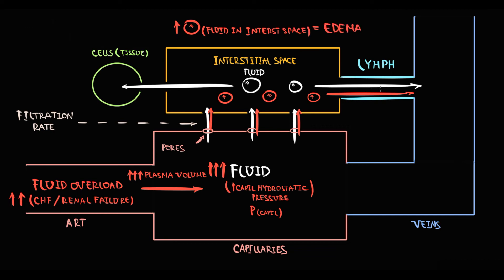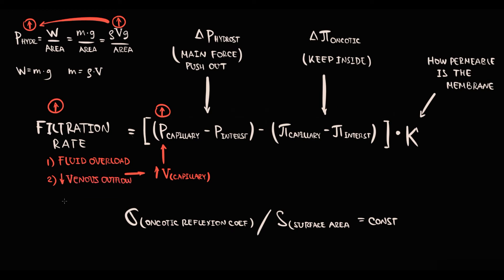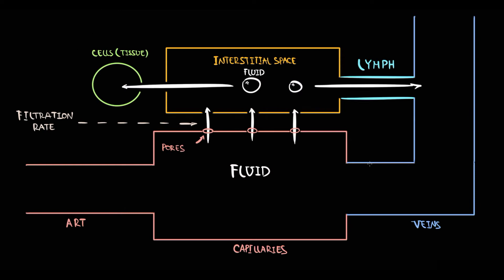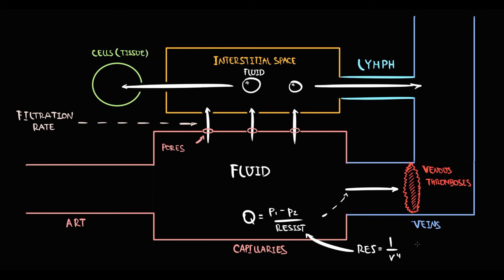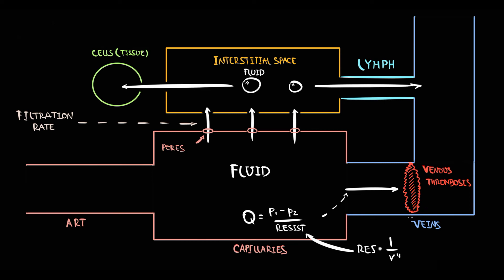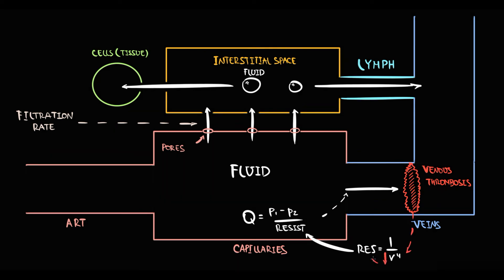The second factor that can increase capillary hydrostatic pressure is decreasing venous outflow, caused by venous thrombosis, compression of the venous vessel by tumor mass, or in congestive heart failure and constrictive pericarditis by impaired venous return. With venous thrombosis, obstruction of the vein decreases flow, because flow equals pressure difference divided by resistance, and resistance is inversely proportional to the fourth power of radius. If thrombosis forms, the vessel radius decreases, resistance increases, and flow through that region decreases.